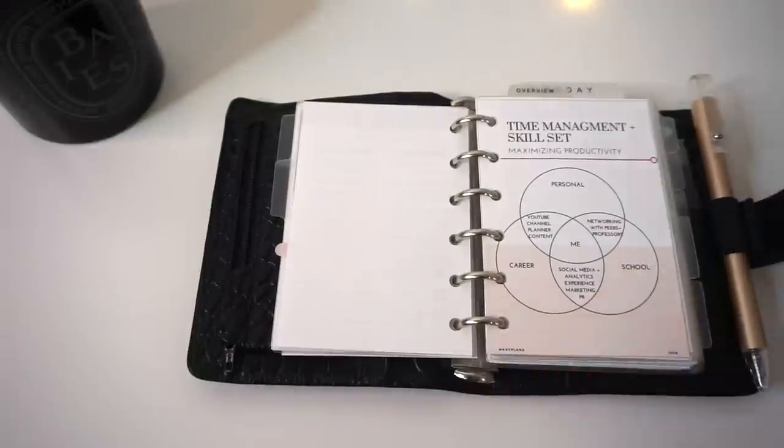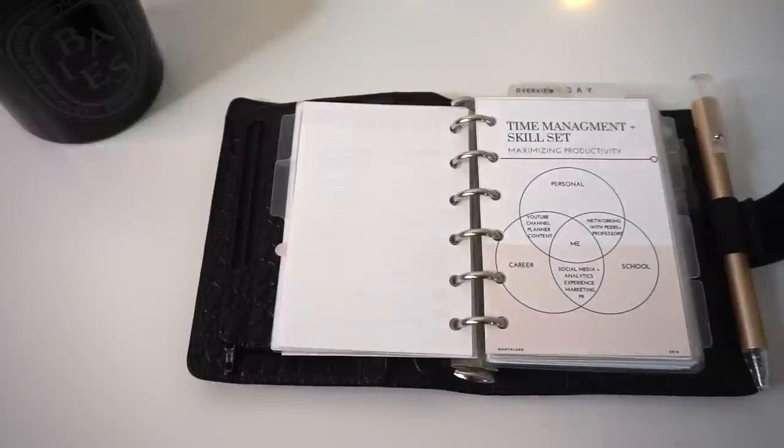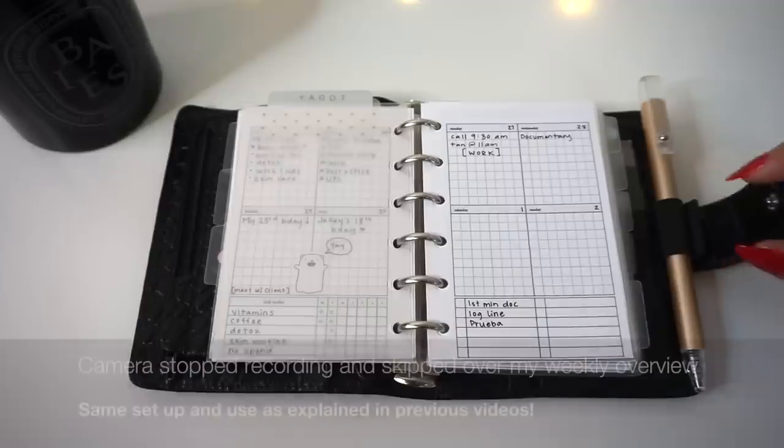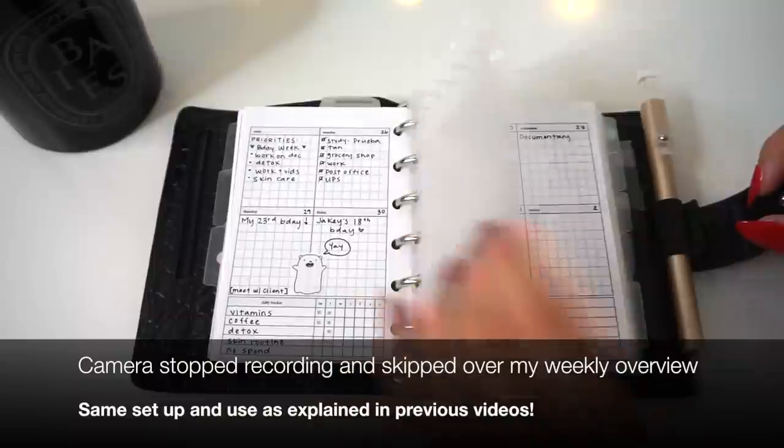And with that I made a little time management and skill set Venn diagram. I wanted to create a chart where I could kind of visually see how each different part of my life works within another part of my life. So I have career, personal, and school.